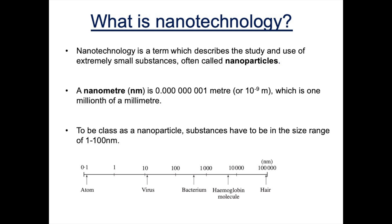To be classed as a nanoparticle, substances have to be in the size range of one to a hundred nanometers in diameter. If you look at the diagram, you will see that viruses are the only object listed that would be classed as a nanoparticle, because it falls in that range of one to a hundred nanometers.